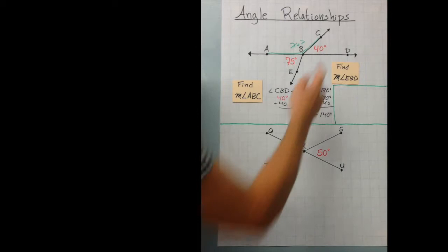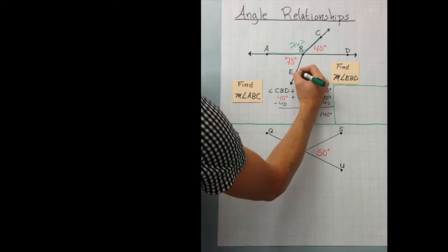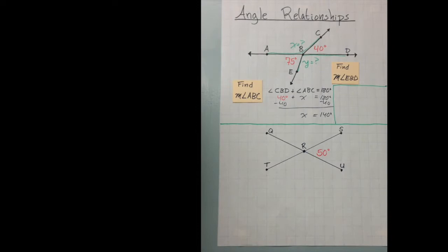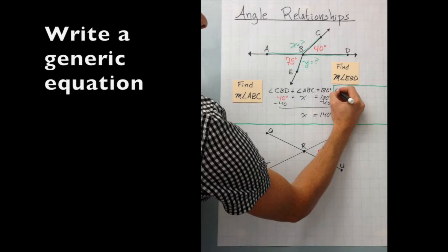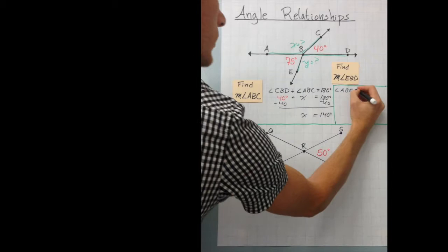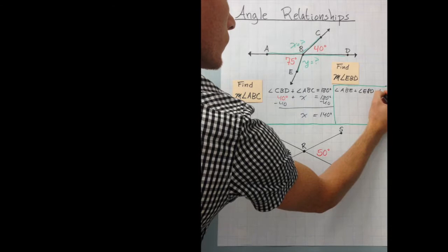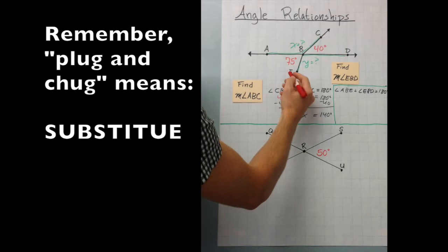So again, we don't know what angle EBD equals. And we'll call it Y just so we don't get confused with that one. But we do know that angle EBA equals 75 degrees. And we also know that this ABD, this angle here, is 180 degrees because it's a straight line. So again, let's just go ahead and set up a simple equation. Angle ABE, this one here, plus our mystery angle, angle EBD, must equal 180 because we have a straight line.